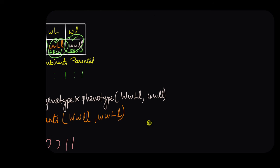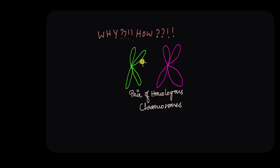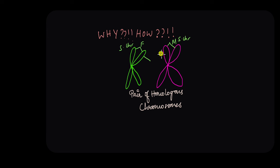Morgan knew that the answer to his question lay within the chromosomes, specifically within the pair of homologous chromosomes. A pair of homologous chromosomes consists of one chromosome inherited from your father and one from your mother. The alleles of genes are located at the same position on both chromosomes. The two chromosomes are known as sister chromatids, and it is between the two non-sister chromatids that chromosomal crossing over, or recombination, takes place.